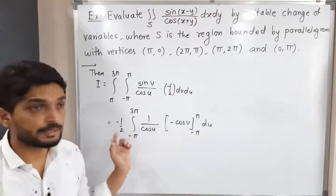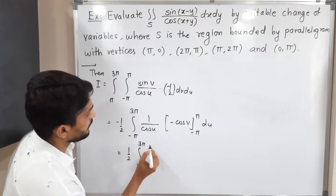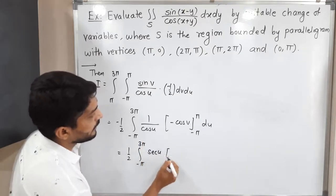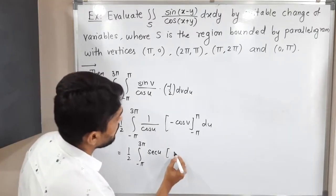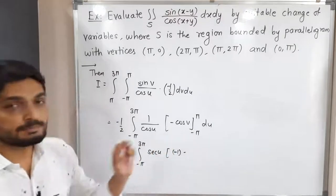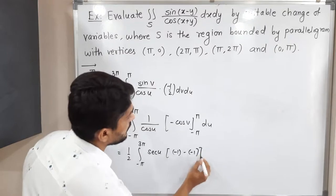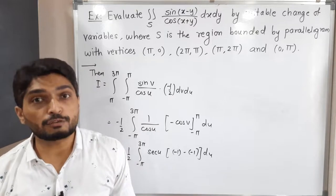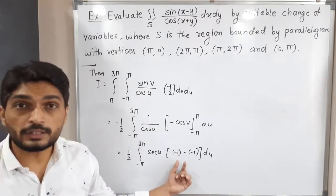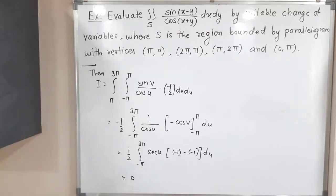Evaluating [−cos(v)] from −π to π: −cos(π) − (−cos(−π)) = −(−1) − (−(−1)) = 1 − 1 = 0. Since the inner integral equals 0, the entire double integral is 0 × anything = 0. Therefore, the value of the given integral is 0.